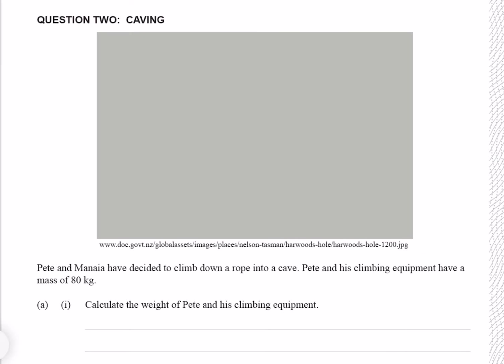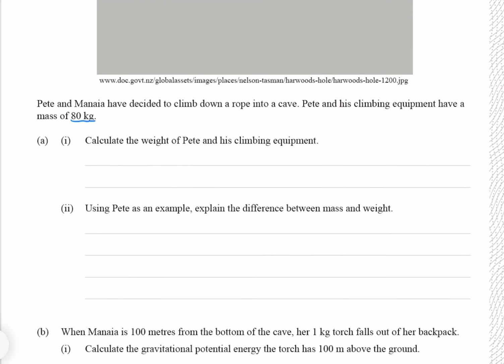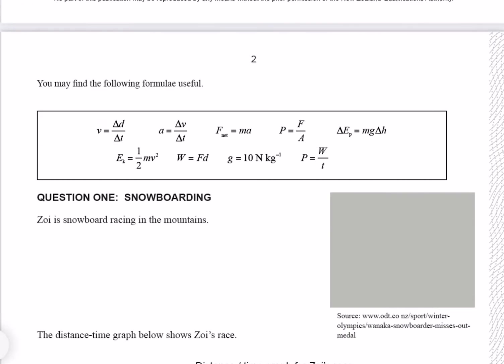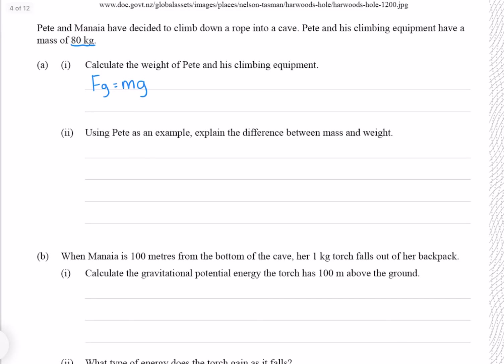Question 2: Pete and Manaya have decided to climb down a rope into a cave. Pete and his climbing equipment have a mass of 80 kilograms. Calculate the weight of Pete and his climbing equipment. Our force of gravity, which is our weight, is equal to the mass times the acceleration due to gravity, g. Scrolling up, we're given a g value of 10 Newtons per kg. So we can put our numbers in, which gives us 800 Newtons.